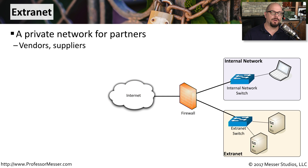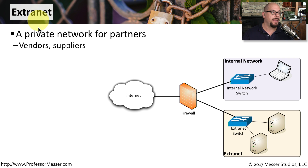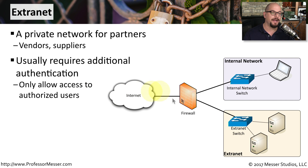In many networks, we have third parties that we trust, and we need to provide them with access to resources on the inside of our network. For those third parties, like vendors and suppliers, we create extranets. You can think of an extranet as a private DMZ. It would not be on the internal network, but it would still provide access from the internet. Anybody accessing the extranet would need to provide the correct authentication credentials to gain access to those resources.